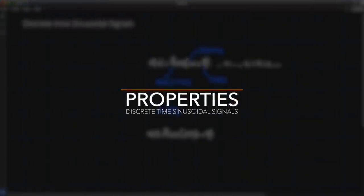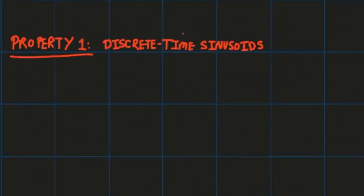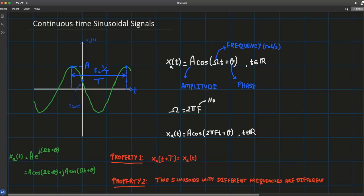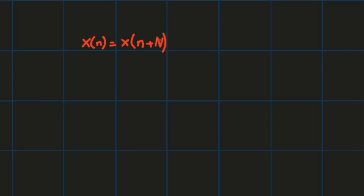Now in contrast to continuous time sinusoids, discrete time sinusoids are characterized by slightly different properties. Property 1 tells us that discrete time sinusoids are periodic if and only if their frequency f is a rational number. A discrete time signal x[n] is periodic if and only if there exists an integer N such that x[n] = x[n + N]. The smallest such N is called the fundamental period.